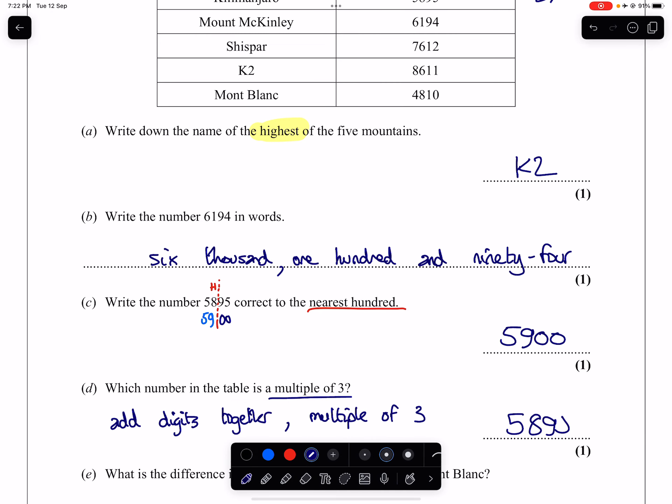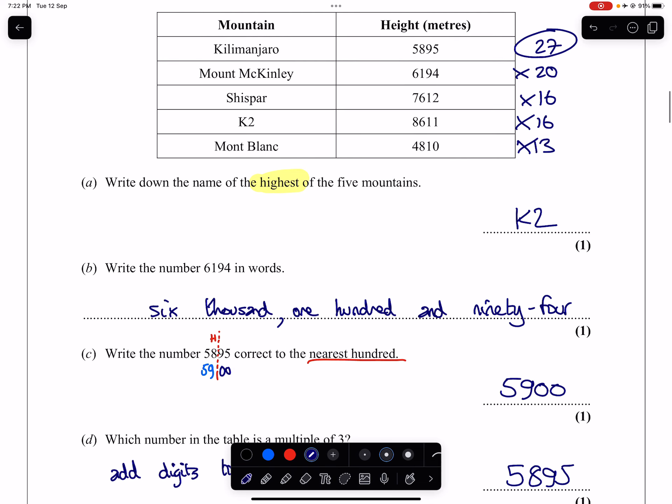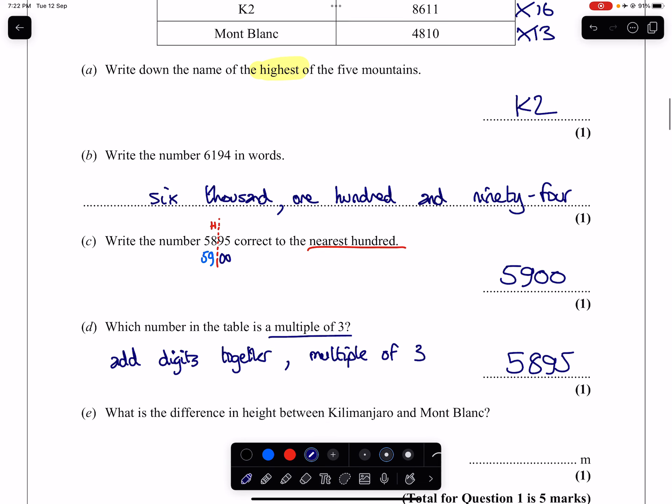Of course, you could just add the digits very quickly for the others just to check. We're going to get 20 if we add the digits there, not a multiple of 3. We're going to get 16 there, not a multiple of 3. We're going to get 16 again here, not a multiple of 3, and we're going to get 13. Just checking there shows that we just got lucky with it being the first one. So 5,895 is that number.